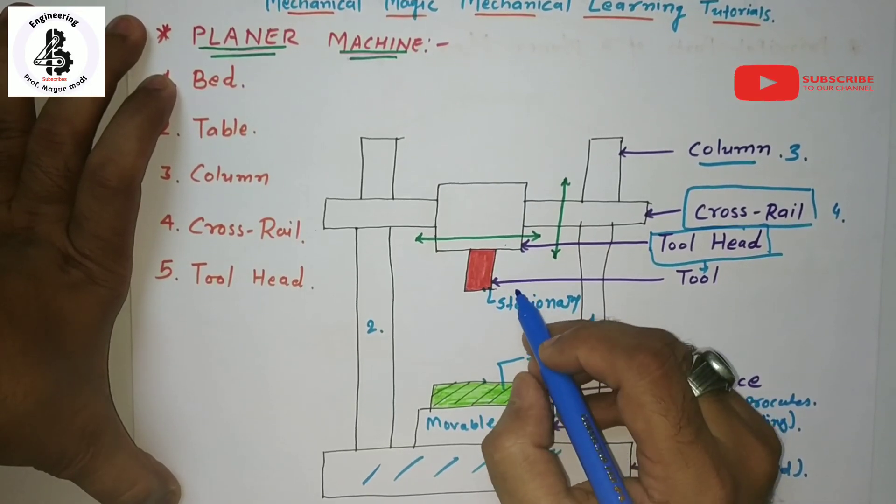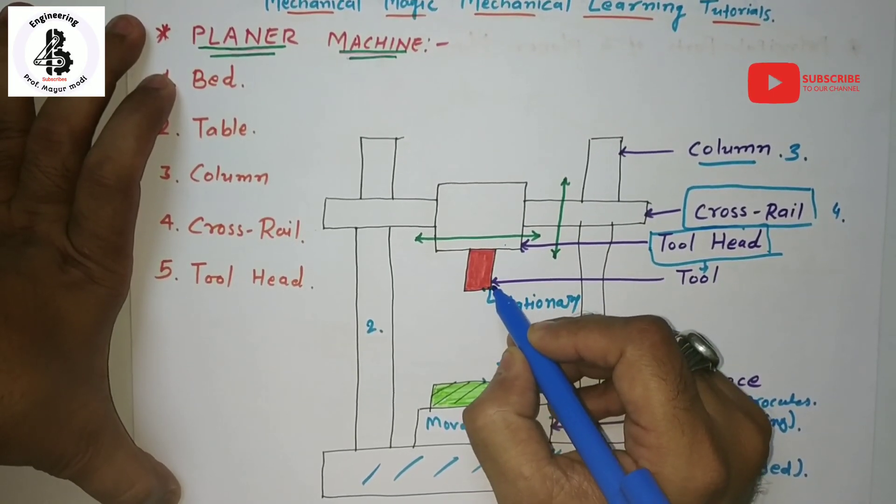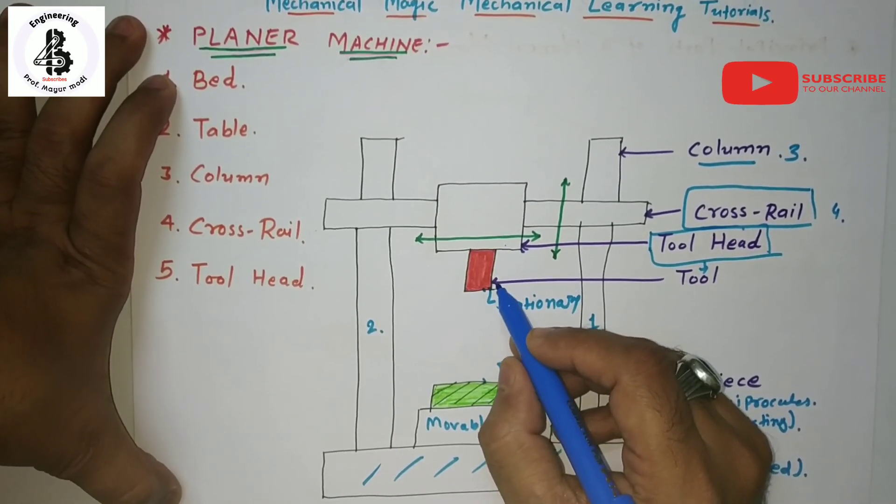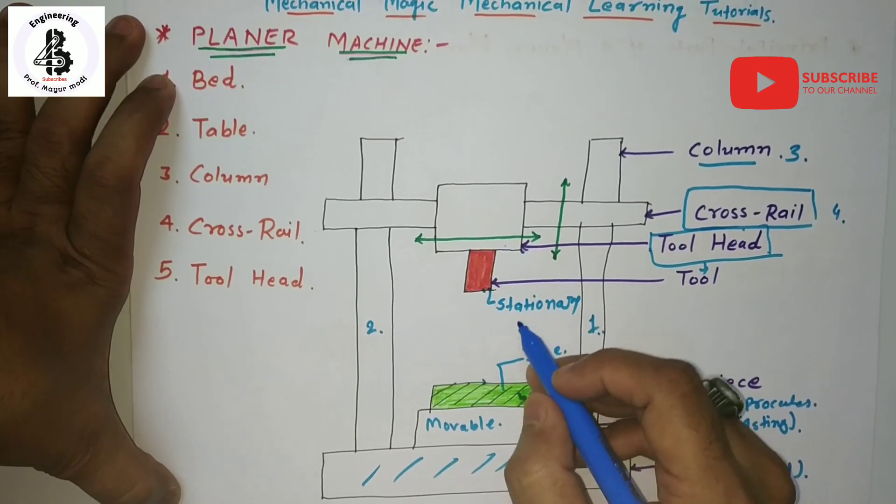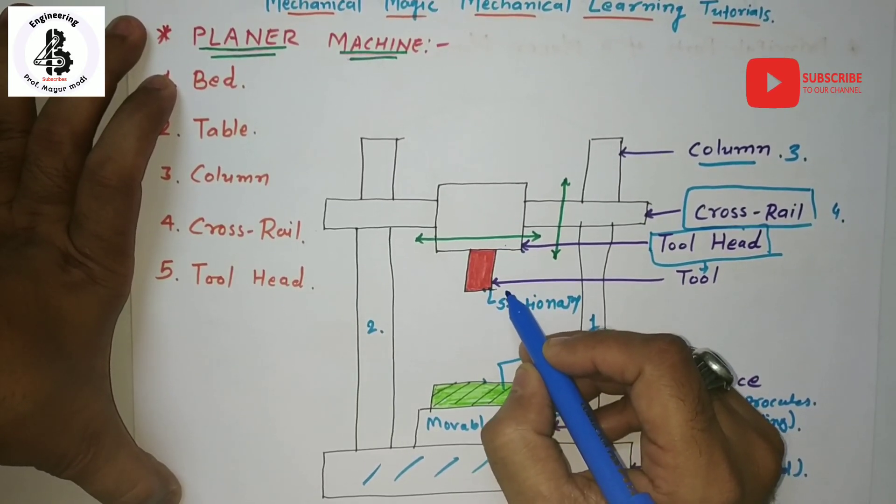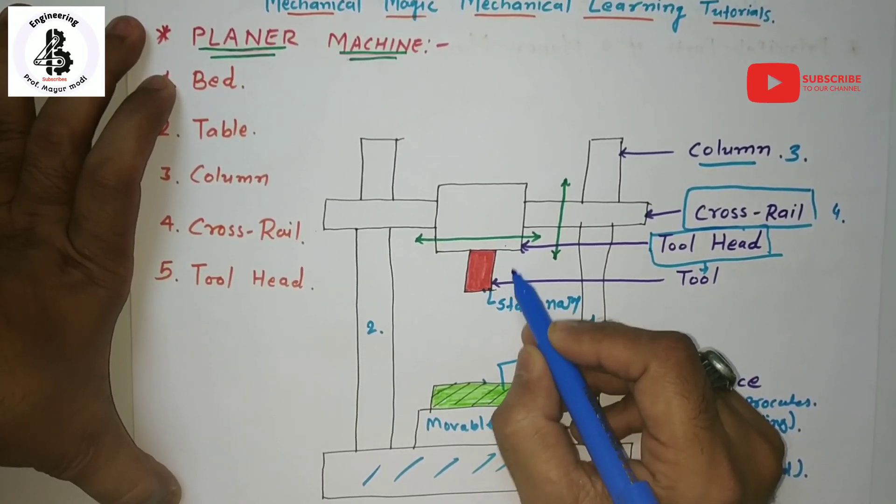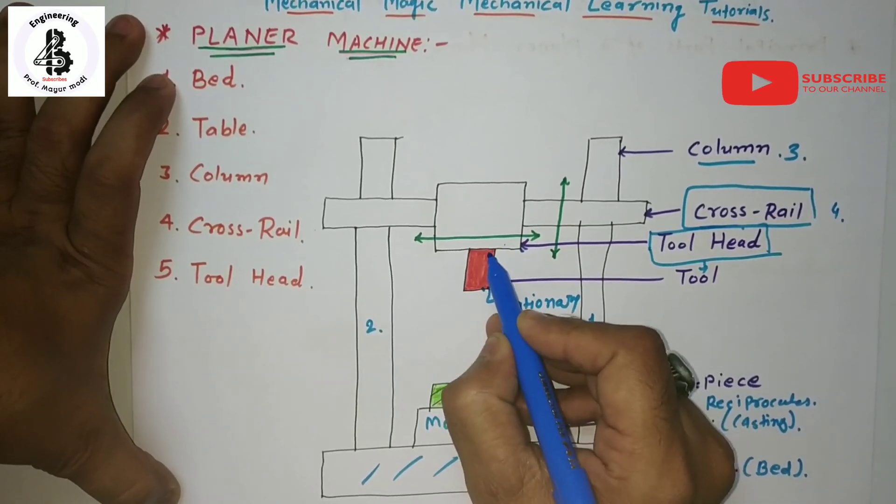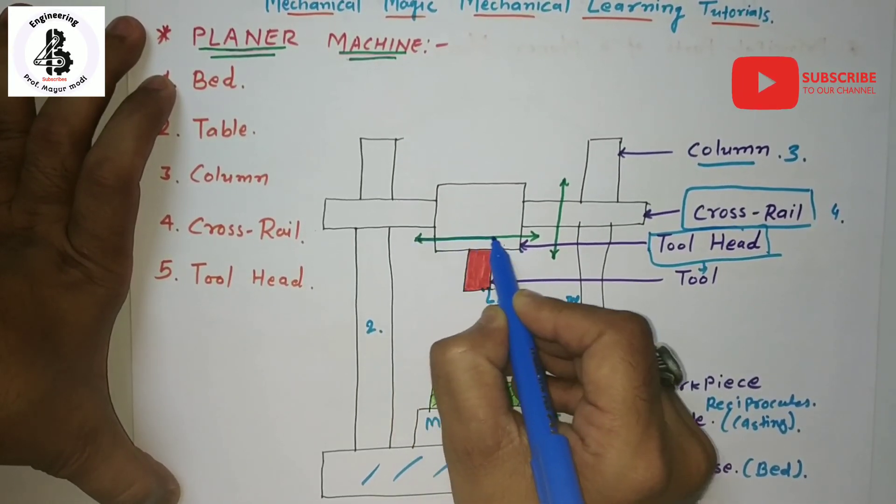The cross rail can be raised or lowered on the face of the housings to desired positions by mechanical, hydraulic, or electrical systems. When it is clamped, it remains perfectly parallel to the top surface of the table, so you can easily adjust the tool head by the cross rail mechanism.